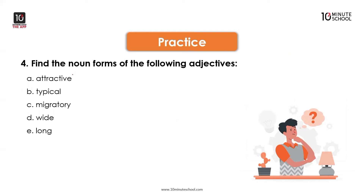Here are the noun forms of the adjectives: Attractive – attraction. Typical – typically. Migratory – migration. Wide – width. Long – length.